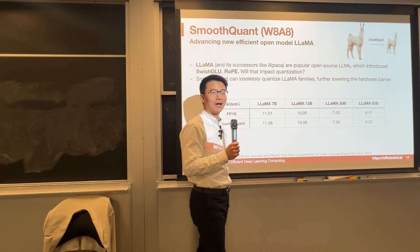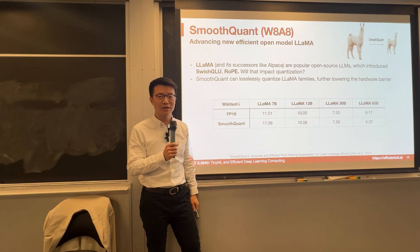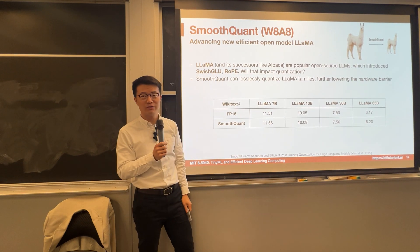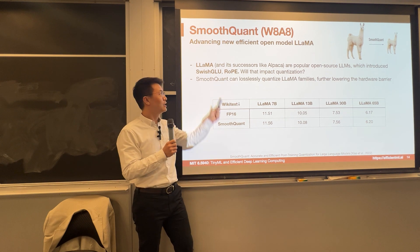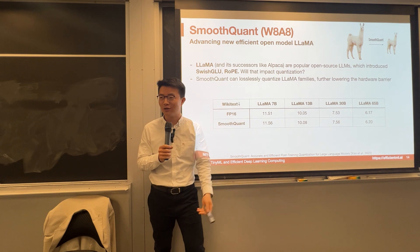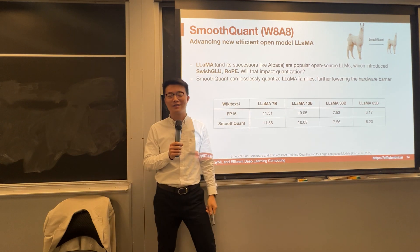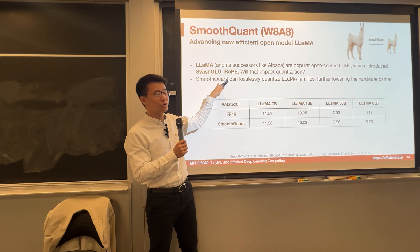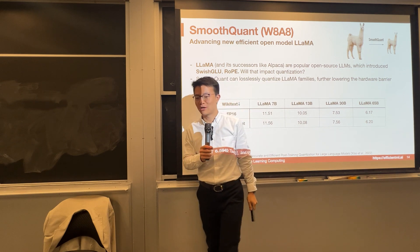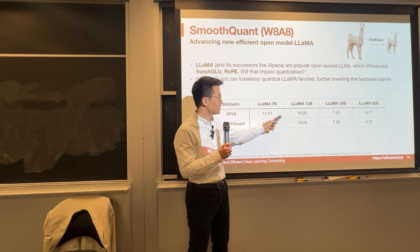What about newer models like LLaMA? LLaMA introduced SwiGLU — using the SWISH activation function, turning two fully connected layers into three gated linear unit layers — and also rotary relative positional encoding. Will these advanced changes impact quantization? SmoothQuant still works very well for this case, quantizing the LLaMA family from LLaMA1 and LLaMA2 — 7B, 13B, 30B, all the way to 65B. The perplexity is very well maintained.